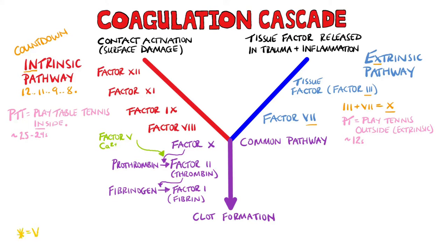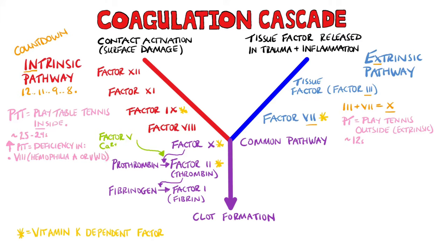The vitamin K dependent factors are factors 2, 7, 9, and 10. Causes for a prolonged PTT with a normal PT include a deficiency in factor 8, for example in haemophilia A or von Willebrand's disease, a deficiency in factor 9 seen in haemophilia B, or deficiencies in factors 11 or 12.